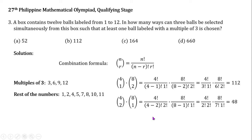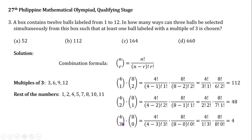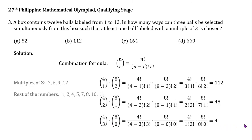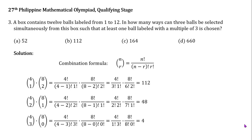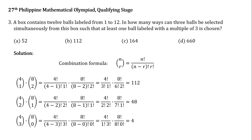The final case: we select 3 multiples of 3. We can do that in 4 choose 3 times 8 choose 0 ways, which gives 4. Adding up all these numbers gives the final answer of 164 ways. So the answer is letter C.